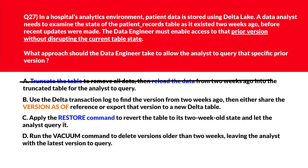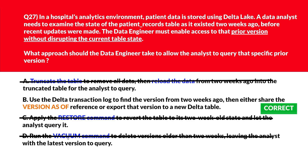Option C says apply the restore command to revert the table to its two-week-old state and let the analyst query it. Restore changes the active table state, which may affect other users or processes — wrong choice. Option D says run the vacuum command to delete versions older than two weeks, leaving the analyst with the latest version to query. Vacuum deletes historical versions, making time travel to two weeks ago impossible. Let's lock option B as the right answer.